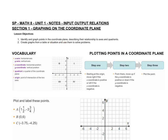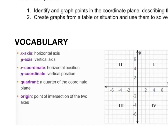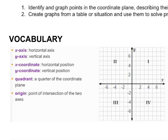The first thing we have here is some vocabulary. When you have a graph, it's comprised of an x-axis and a y-axis. Your x-axis is horizontal, and your y-axis is your vertical axis.